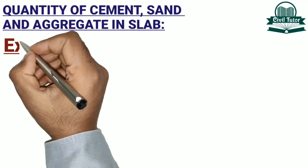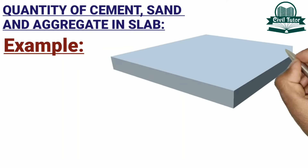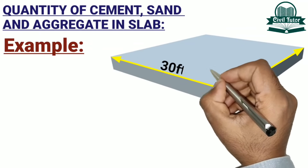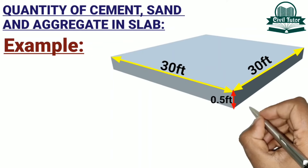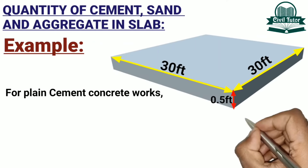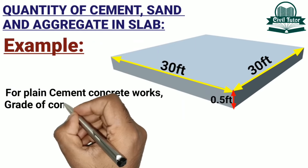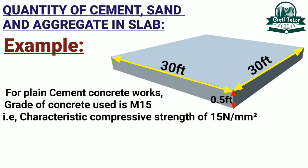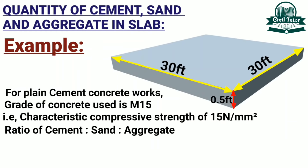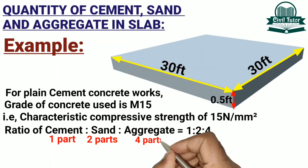Let's illustrate this with an example. Suppose we have to construct a slab of length and breadth as 30 feet each and the thickness of slab is 6 inches, that is 0.5 feet. For plain cement concrete work, the grade of concrete used is M15, meaning we need to achieve a characteristic compressive strength of 15 newton per mm square. The ratio of cement, sand and aggregate for M15 grade concrete is 1:2:4 — that is, 1 part cement mixed with 2 parts sand and 4 parts aggregate.